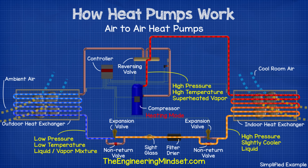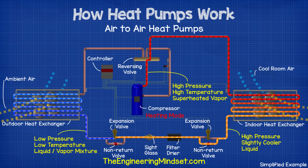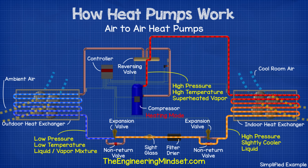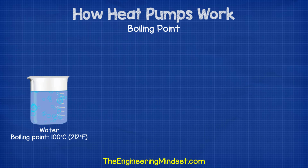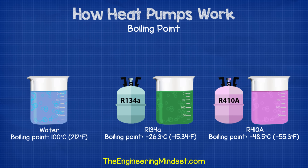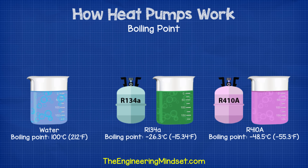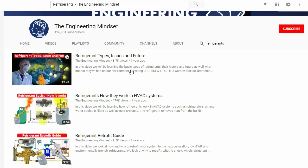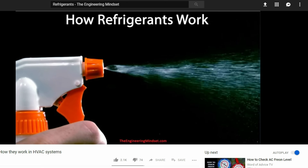The refrigerant then heads to the outdoor heat exchanger, where a fan is blowing outside ambient air over the coil and adding heat to the cold refrigerant. The refrigerant boils at a very low temperature and as it boils, it will carry away the thermal energy. For example, we know that water carries thermal energy away as steam when it boils at 100 degrees Celsius or 212 degrees Fahrenheit. If we look at some common heat pump refrigerants: R134A has a boiling point of minus 26.3 degrees Celsius or minus 15.34 degrees Fahrenheit, and R410A has a boiling point of minus 48.5 degrees Celsius or minus 55.3 degrees Fahrenheit. So it's very easy to extract thermal energy even at very low outdoor temperatures. We've covered how refrigerants work also in a previous video — links can be found in the video description below.